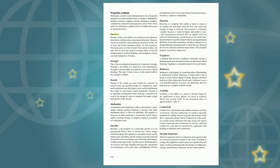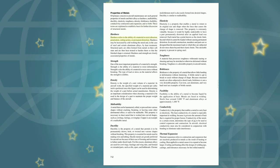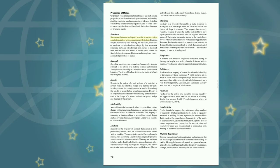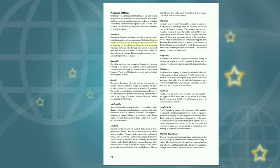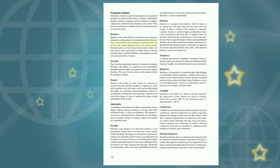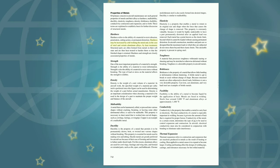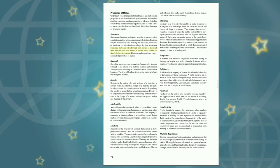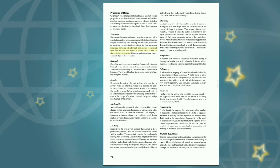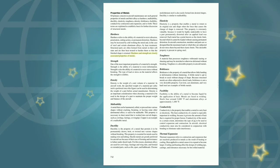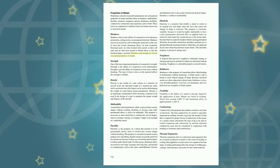Hardness refers to the ability of a material to resist abrasion, penetration, cutting action, or permanent distortion. Hardness may be increased by cold working the metal, and in the case of steel and certain aluminum alloys, by heat treatment. Structural parts are often formed from metals in their soft state and are then heat treated to harden them so that the finished shape is retained. Hardness and strength are closely associated properties of metals.